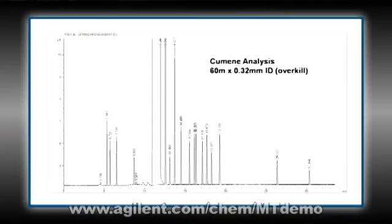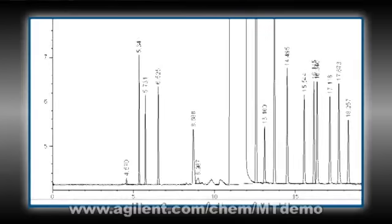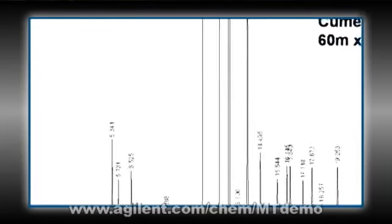Now here we've got a cumene analysis. They're doing purity of cumene. That's a large peak in the middle, which is isopropyl benzene, for those of you who don't work with this compound. They have a 60-meter, 0.32-millimeter ID column.